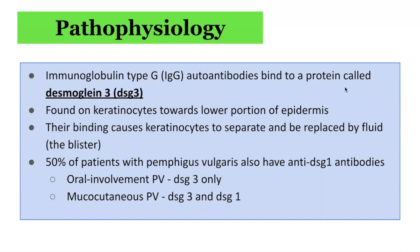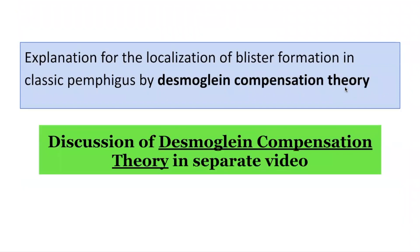50% of patients with Pemphigus vulgaris also have anti-Desmoglein 1 antibodies. In oral-only involvement, the target is usually only Desmoglein 3, whereas in mucocutaneous Pemphigus vulgaris, the targets include both Desmoglein 3 and Desmoglein 1. These variations in blister localization can be explained by the Desmoglein Compensation Theory, which will be the focus of a separate video in this series.